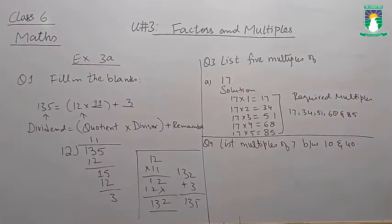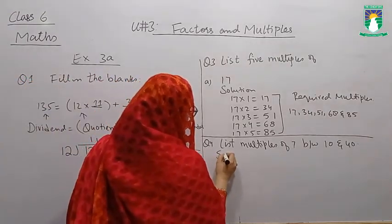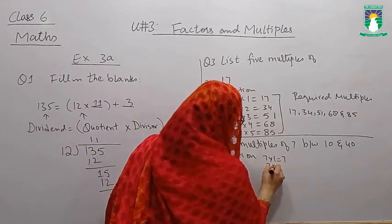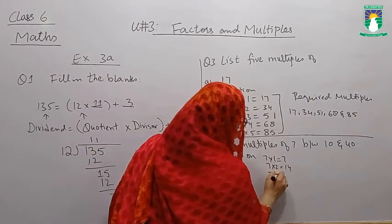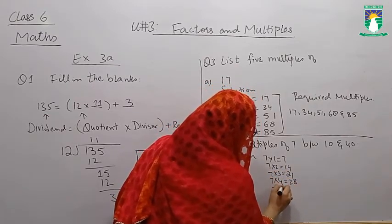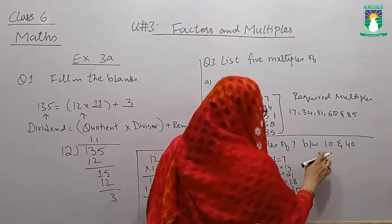Now question number 4: List multiples of 7 between 10 and 40. Students, 7 ones are 7, 7 twos are 14, 7 threes are 21, 7 fours are 28, 7 fives are 35, 7 sixes are 42.